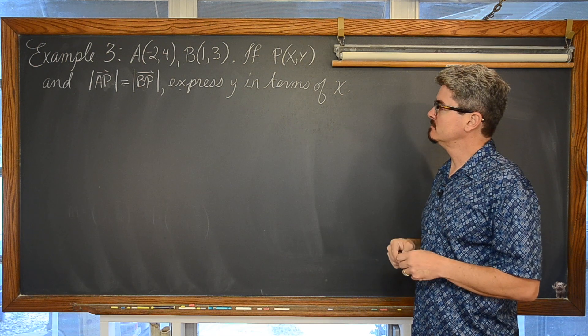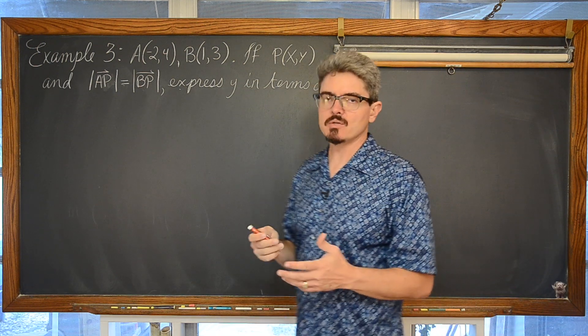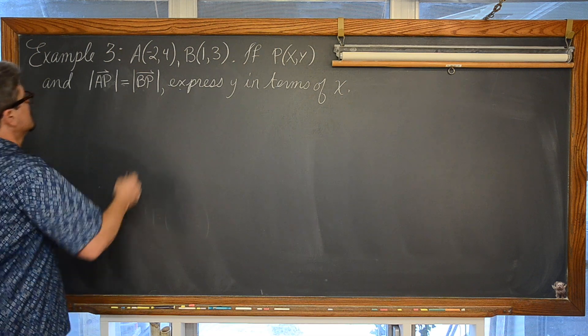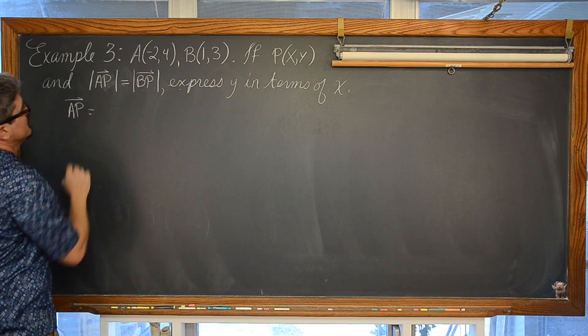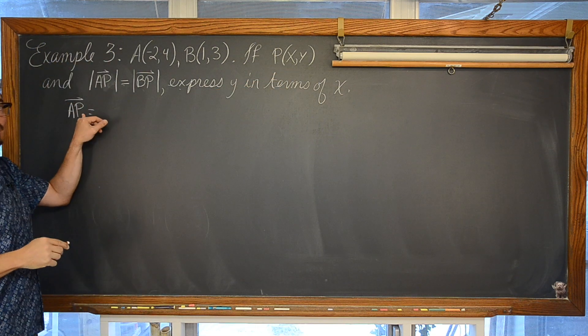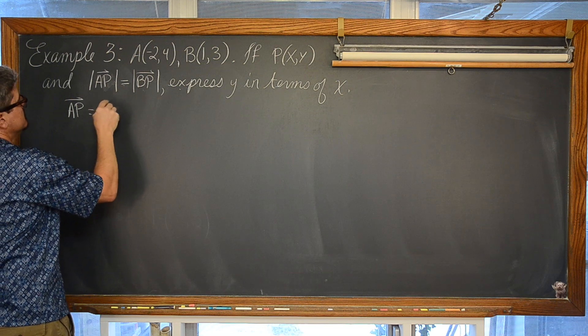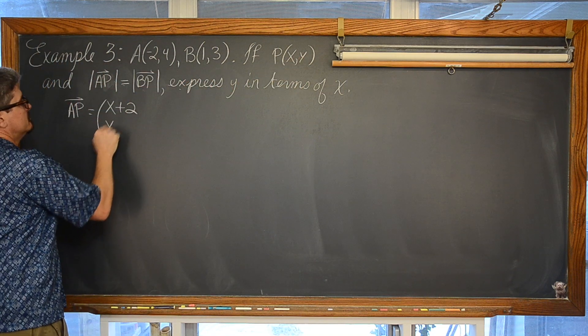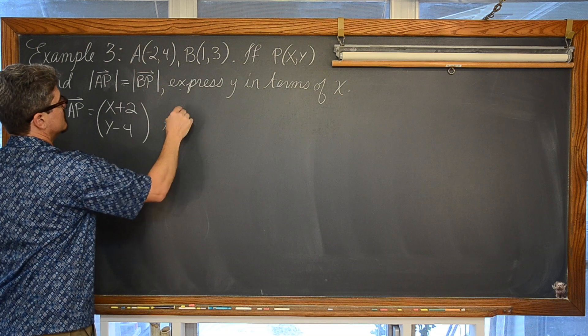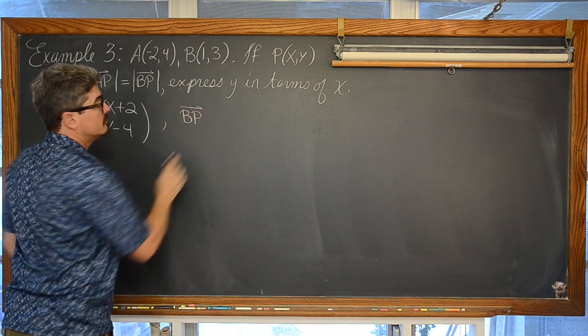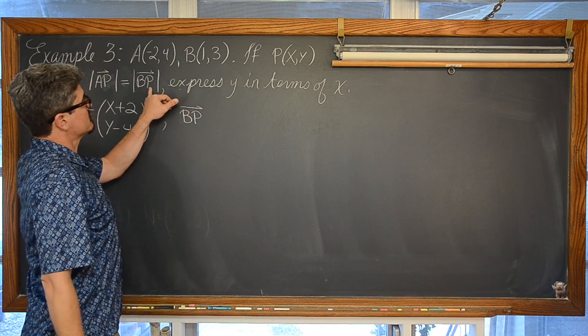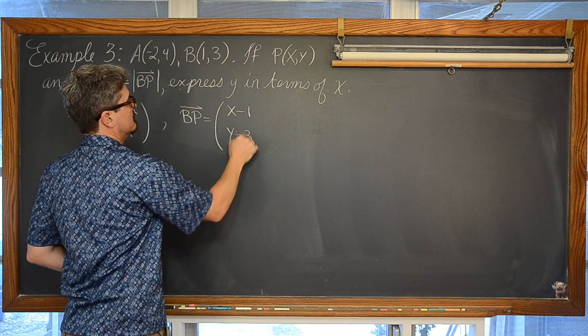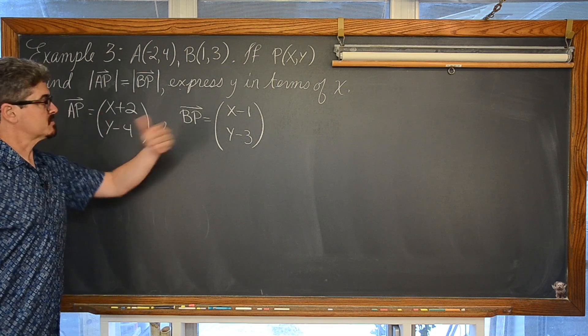Ok, well if we are going to set up the magnitude of vector AP and make it equal to BP, we have to find those two vectors. So, vector AP is going to be, of course again this is initial and terminal point, so x minus negative 2, or x plus 2, for the horizontal component. And y minus 4 for the vertical. Vector BP likewise, initial terminal, horizontal component, vertical component.